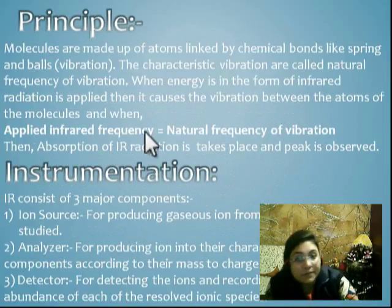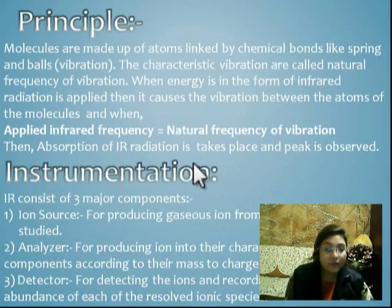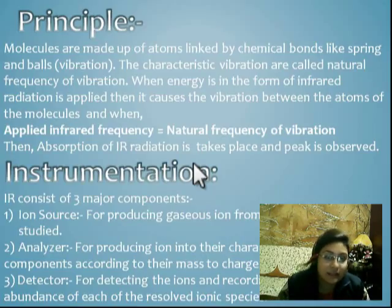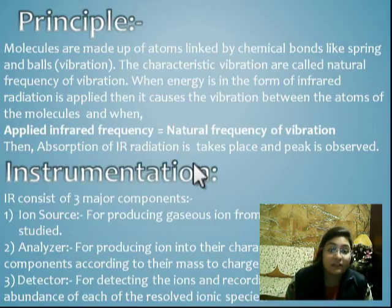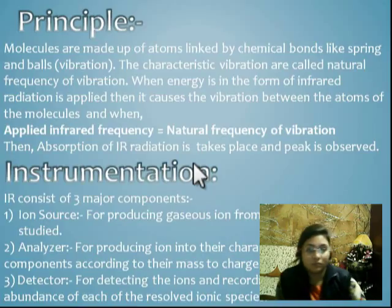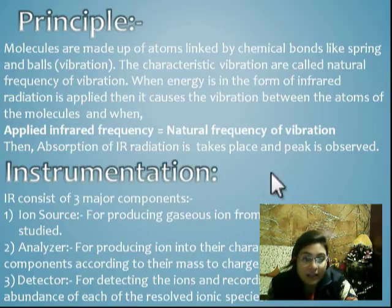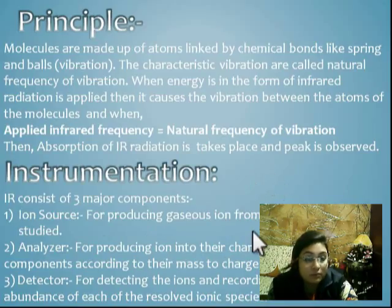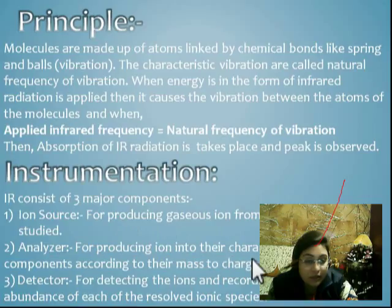The principle of infrared spectroscopy is that every molecule is made up of atoms linked by chemical bonds, and there is a characteristic vibration called the natural frequency of vibration. When energy in the form of IR radiation is applied, it causes vibration in the atoms of the molecule. The instrumentation of IR spectroscopy consists of an ion source which produces ions, an analyzer for separating ions into their characteristic components according to their mass-to-charge ratio, and a detector which detects the ions and records the result.